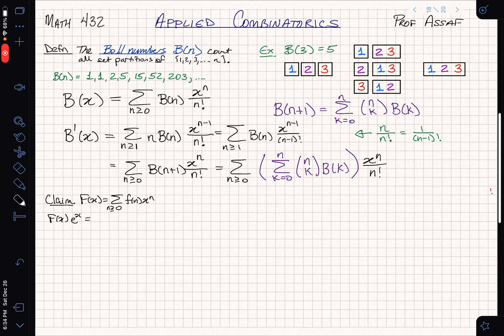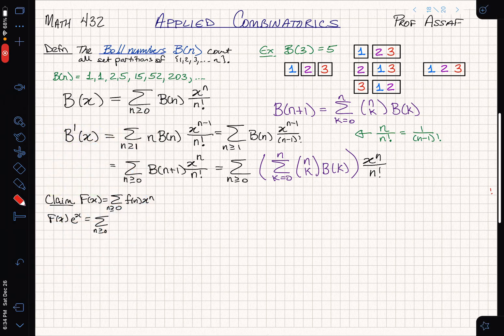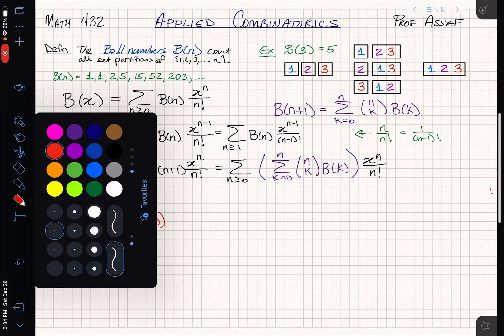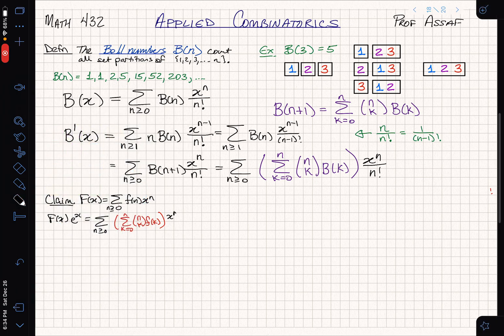It turns out that this is a form that's very familiar when you're playing with generating functions. Let me write this over here as a claim, and this will be part of your homework to work out the details. If I have any exponential generating function, say f, the sum n greater than or equal to 0, f(n) x to the n, what happens when I take f(x) and multiply it by e to the x? If I just multiply this out, I get the sum n greater than or equal to 0. The coefficients that I get are going to be the sum from k equals 0 to n of n choose k, f(k), multiplied by x to the n over n factorial.